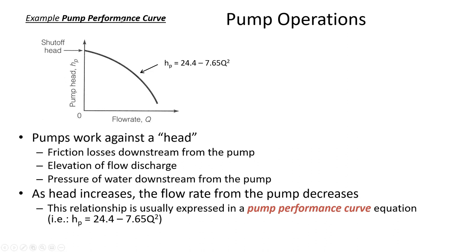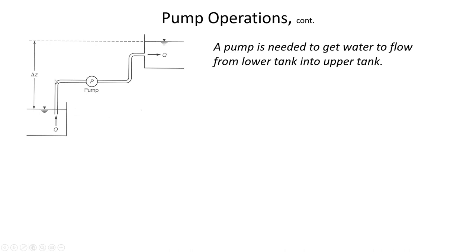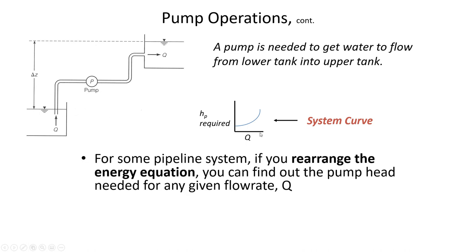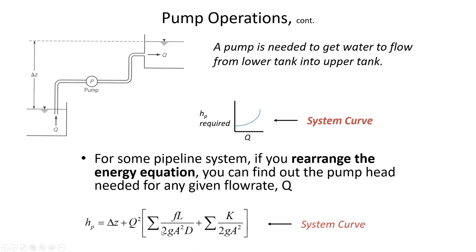We can also construct a system curve. Here's a depiction of a typical system where we draw water from one tank through a pipe, with a pump lifting the water to an elevated tank. We can measure the delta Z, quantify inlet effects, account for bends using K values, and account for local losses and pipe friction losses. From that we construct the system curve, which has pump head required on one axis and flow rate on the other.